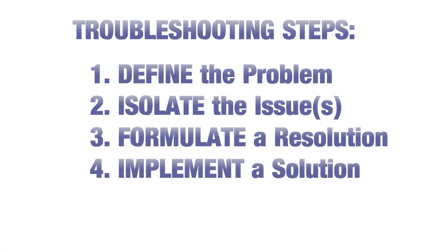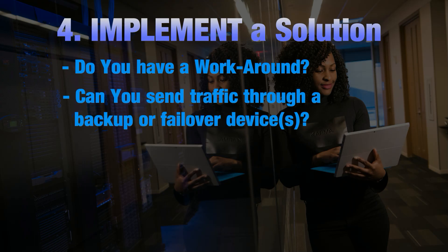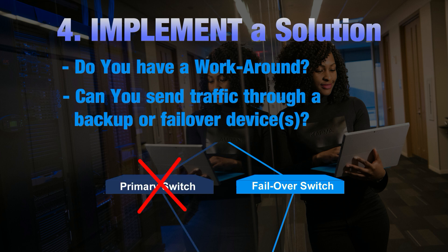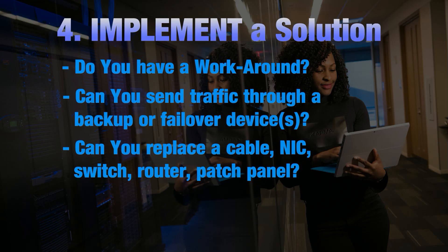Once you've used troubleshooting methods in step three to isolate the issue and come up with a tentative solution, you're ready to move to step four: find a resolution. Do you have a workaround? Can you send traffic through a backup or failover device? For instance, you might have two switches with the same configuration running side by side — if one goes down, the other takes over. Can you replace a cable? Do you have a technician on site to replace the bad cable or reboot the switch or router? If you had backup power supplies, did they keep everything running long enough for main power to come back? Step four is where you immediately implement a solution to get the network back to where it was prior to the issue.